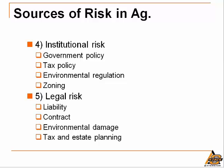The fourth general category is institutional risk. This involves uncertainty regarding government policy — for example, whether the government will change the subsidy level for crop insurance or whether a forage disaster payment will follow adverse conditions. Uncertainty regarding changes in future tax policy falls under this category as well. Any type of regulation, including environmental or zoning regulations that might impact the operation, also falls here.